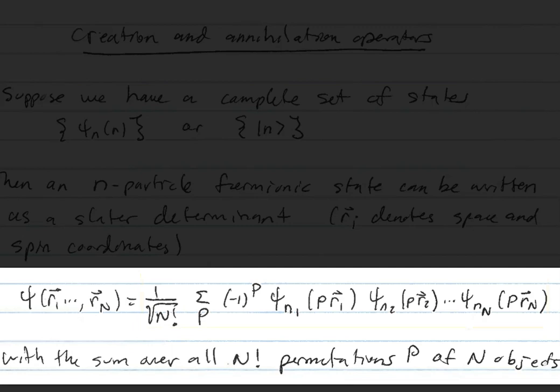When we sum over all of those permutations, we have all possible products of those single particle states expressed in terms of the different possible coordinates they can have. The minus 1 raised to the power of the permutation — equal to 1 if even, minus 1 if odd — is exactly what is needed to guarantee that the wave function will be anti-symmetric under the interchange of any two particles. If we interchange any two coordinates of the multivariable function, the function needs to change sign.